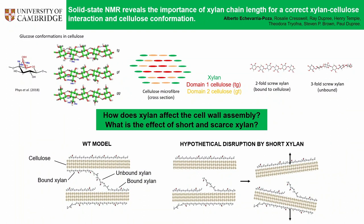On the other hand, xylan can also adopt two different conformations. It can adopt a 2-fold screw conformation, which is when it is bound to cellulose, or it can also have a 3-fold screw conformation, where it is unbound.